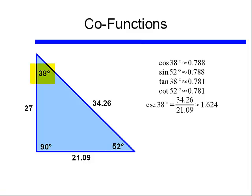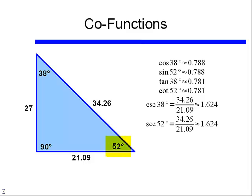And if we look at the cosecant of 38 degrees, we recall that the cosecant of an angle equals the hypotenuse divided by the opposite side, or 34.26 divided by 21.09, or approximately 1.624. And if we look at the secant of the 52° angle, we find that it equals the hypotenuse divided by the adjacent side — the same number as the cosecant of 38 degrees.